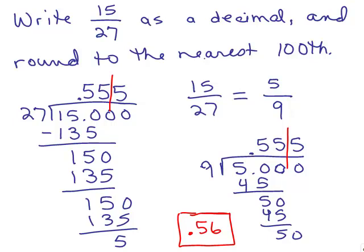But which is easier for you to do? Dividing by 9 or dividing by 27? You don't always have this choice but if it does reduce, go ahead and reduce it. It's usually going to be easier to do your division because you'll have a smaller number in the denominator.